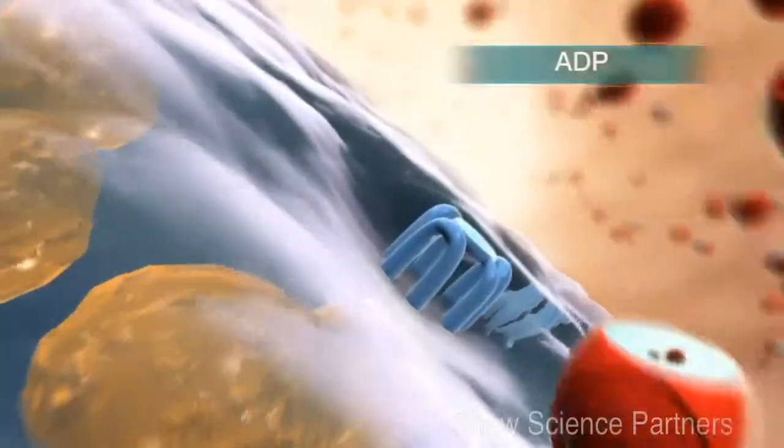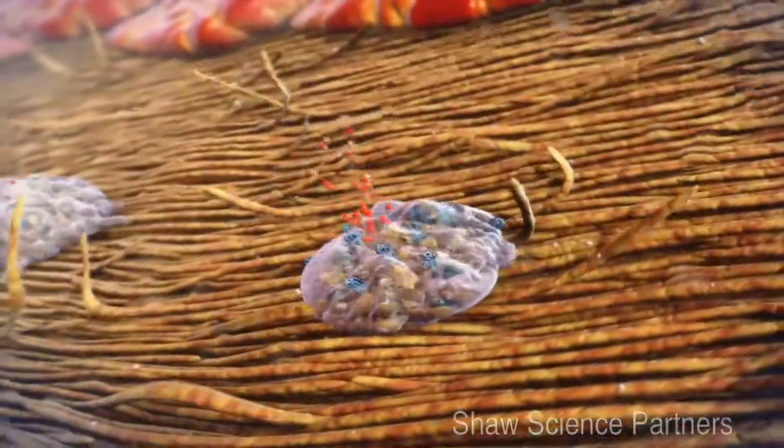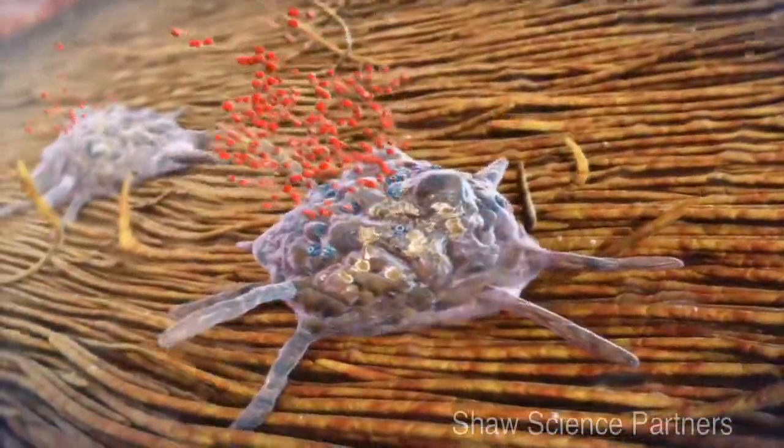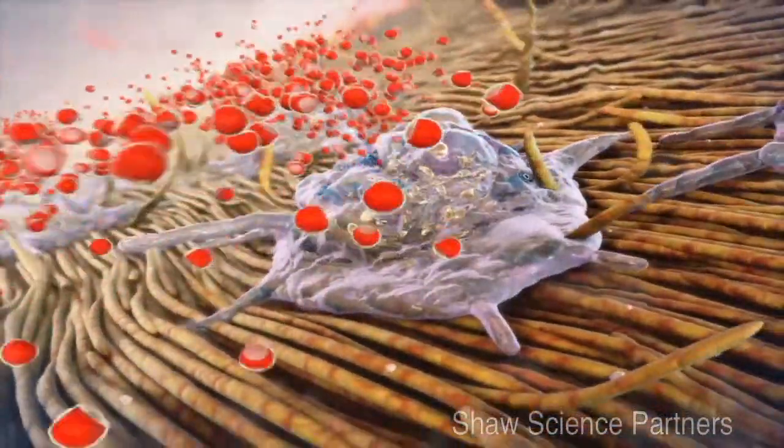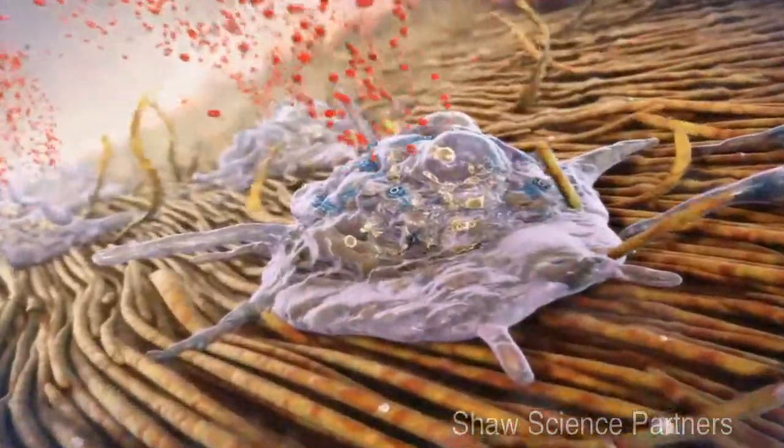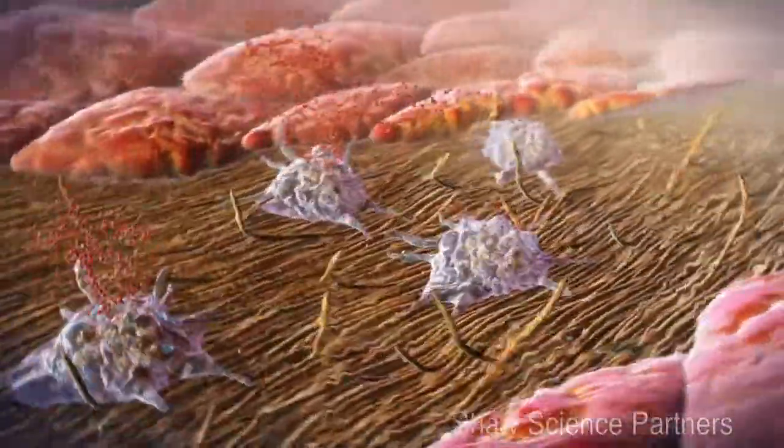The binding of ADP to P2Y12 receptors on the platelet surface is a critical step in amplifying the structural and metabolic changes associated with platelet activation. Because of its important role in platelet activation, the binding of ADP to the P2Y12 receptor is a target for pharmacologic intervention with antiplatelet drugs.